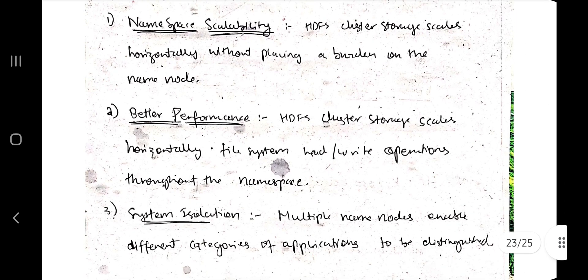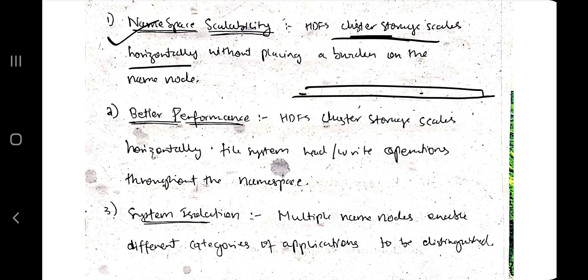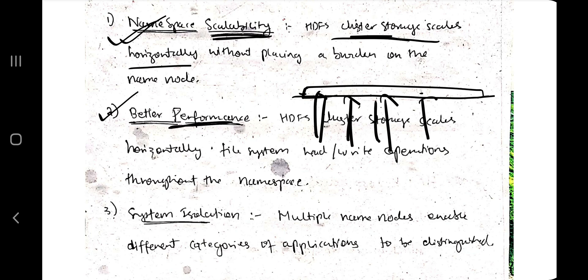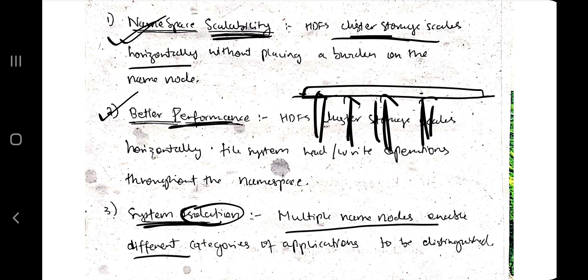The resources of the name node determine the size of the namespace. Features of name node federation include: namespace scalability — the HDFS cluster storage is horizontally increased by adding more nodes in the same cluster; better performance — adding more nodes allows tasks to be performed in parallel; and system isolation — multiple name nodes enable different categories of applications to be distinguished. These are the features to write for name node federation.